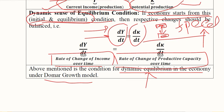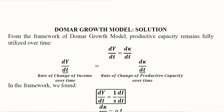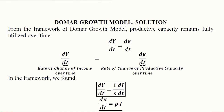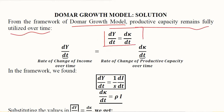In this video we develop the solution for the Domar growth model — the solution of investment and its time path. We are borrowing the dynamic equilibrium condition developed in the last video. Productive capacity remains fully utilized over time; this is the basic premise of the Domar growth model. In other words, we can write it as this dynamic equilibrium condition.